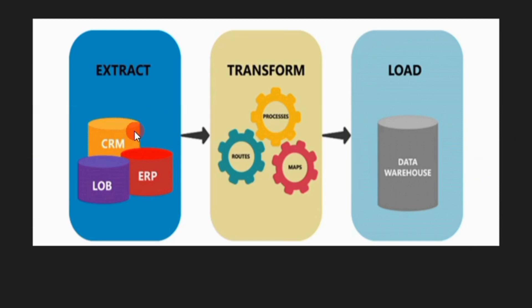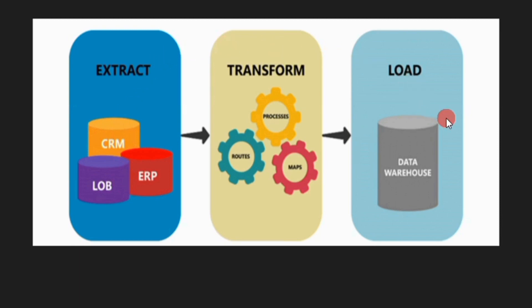For example: CRM is a Chicken Shop, ERP is a Mutton Shop, and LOP is a Fish Market. The load destination is your shop — a Mixed Biryani Center. Here we take the chicken, meat, and fish and make Mixed Biryani. This process of combining ingredients represents the transformation step.